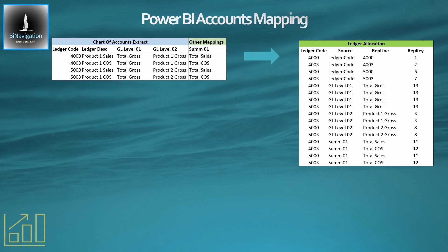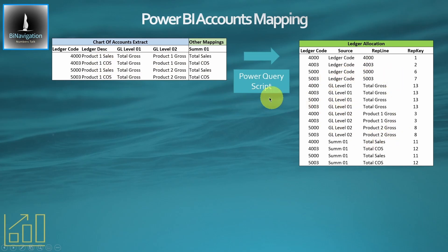Total gross here has got all four ledger codes in it. Product gross one has got the four-thousands, product gross two has got the five-thousands, and so on. We'll talk about the rep key thing on the right hand side shortly. We generate all of that with a Power Query script — it would be too difficult to maintain that ledger allocation manually, but it's very easy to maintain within the extended chart of accounts.